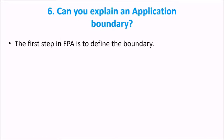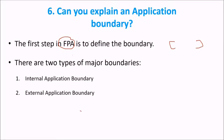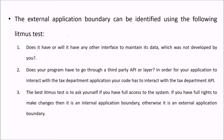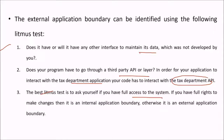Can you explain the application boundary? The first step in function point analysis is to define the boundary. There are two types: internal application boundary and external application boundary. The external application boundary can be identified by asking: does it have any interface to maintain its data that you don't control? Does your program go through a third-party API or layer? The best test is to ask yourself — if you have full rights to make changes, it is an internal application boundary; otherwise it is an external boundary.